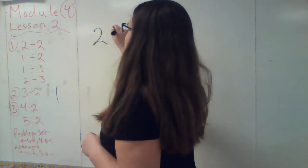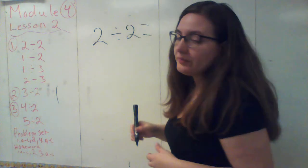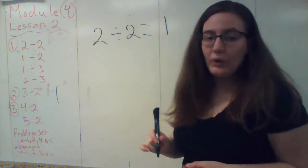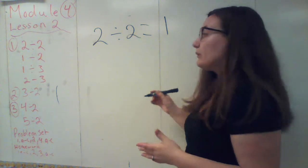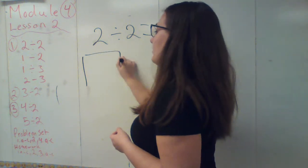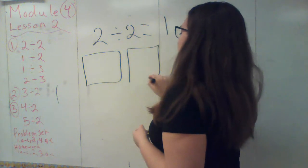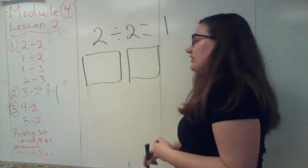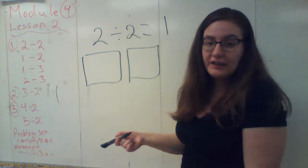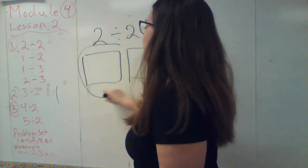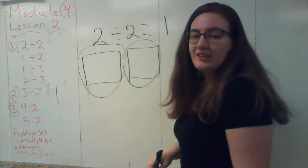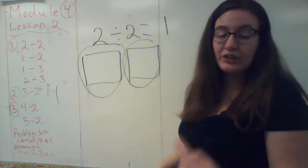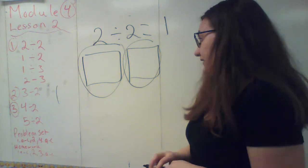So if I have 2 divided by 2, you probably know that 2 divided by 2 is 1. But I want to start drawing models to show this. If I have 2 divided by 2, it's like I have 2 cookies and I want to divide them between two people. I can show that by circling both of these boxes and showing that each person got 1 cookie, and that 1 is my final answer.